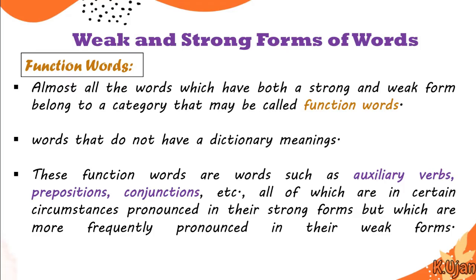Function words include auxiliary verbs like 'is,' 'am,' and 'are'; conjunctions like 'and,' 'but,' and 'because'; and prepositions like 'in,' 'on,' and 'at.' These words are function words and they do have strong forms, but mostly these words are spoken by native speakers as weak forms.